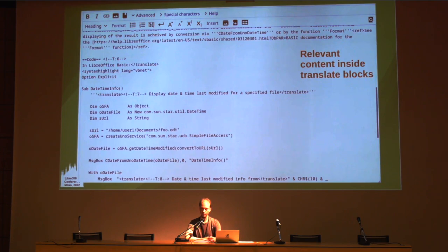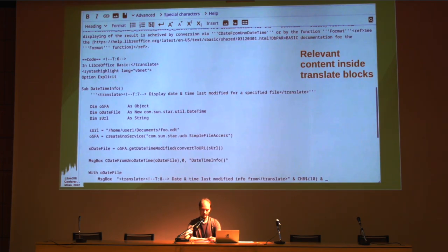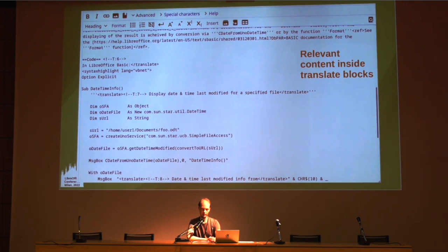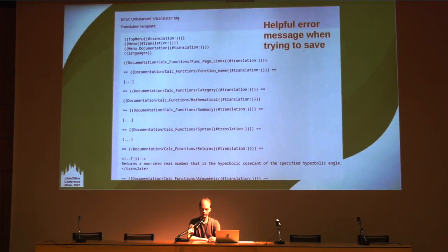When setting up content for translation, we generally want to minimize the amount of unnecessary stuff that translators need to handle. This typically happens by carefully including only relevant content inside translate elements. This is also the source of much tedious work. Here you can see how a code block as a whole is not included for translation, while code comments are explicitly picked for translation.